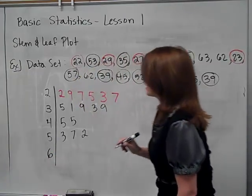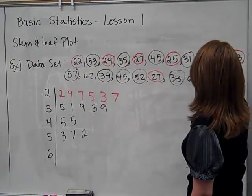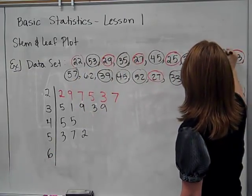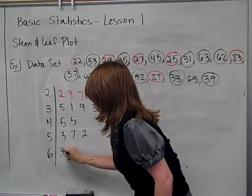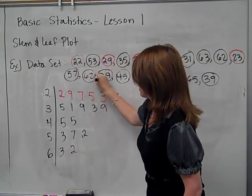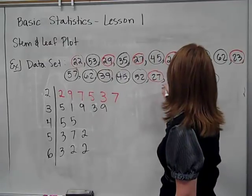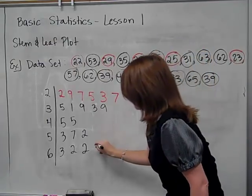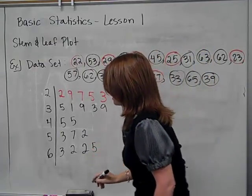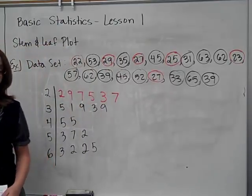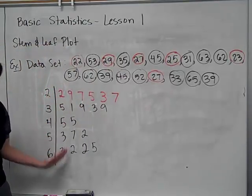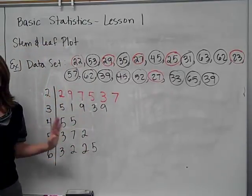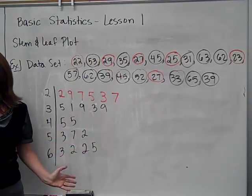And then the 60s. 62. I see 63 and 62. 62 again. Another 62 and a 65. And again, try to spread out your numbers evenly so that you can tell the first column, second column, third, and which row is longer, which row is shorter.